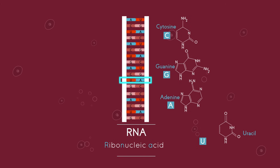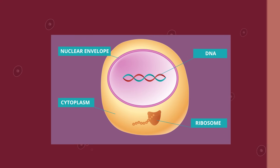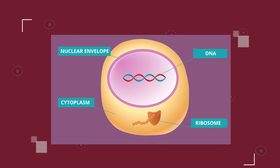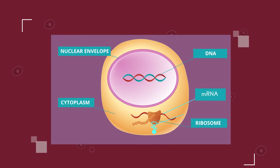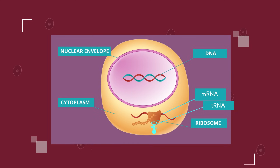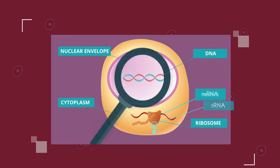We need to know about RNA because we will see it when learning about protein synthesis. We will see these two special types of RNA: messenger RNA, known as mRNA, and transfer RNA, known as tRNA. We will see the mRNA being synthesized inside the nucleus, copied from the DNA code.